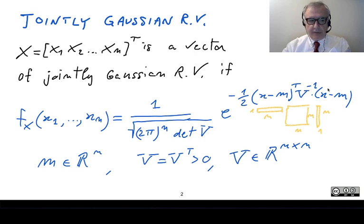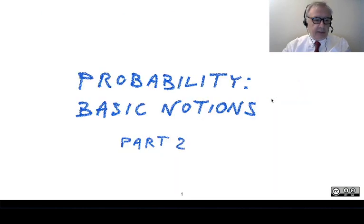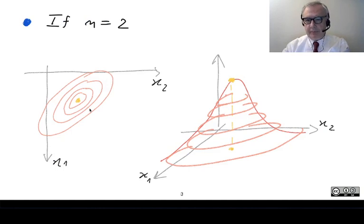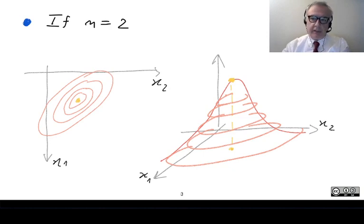This is the quadratic form we were discussing, with the square matrix, the column vector, and the row vector. If you look at the level lines of the surface, you find that the level lines are ellipses. Of course, we cannot visualize this when the number of dimensions is greater than two.